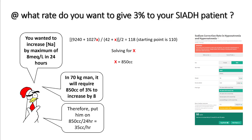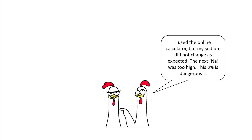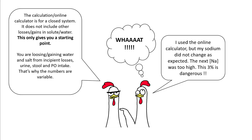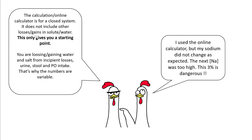One common observation is that despite doing perfect calculations and using calculators, the sodium doesn't change as expected — it's either too high or too low. This can dissuade people from using hypertonic saline. The key is to understand that the calculation or calculator is for a closed system — it does not account for other losses or gains of solute and water. The number gives you a starting point. Remember: your patient is not a closed system but an open system — they're eating, drinking, and losing water and solute through insensible losses, urine, and stool.